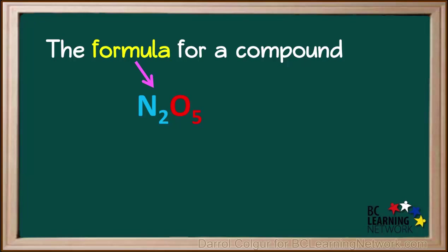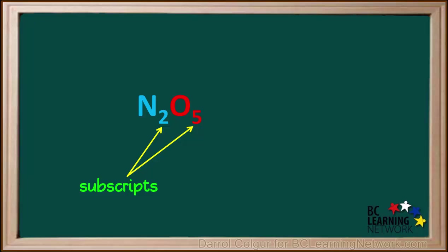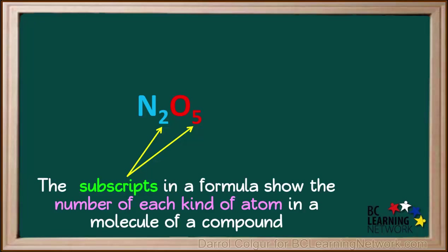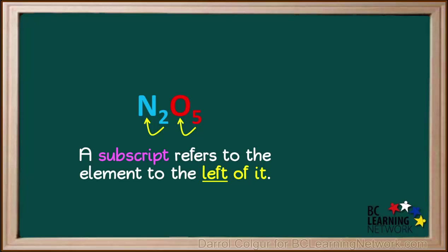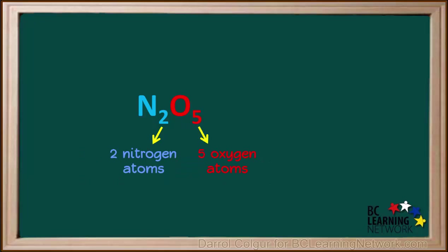The formula for a compound contains element symbols and commonly contains little numbers. Little numbers written to the bottom right of element symbols in a formula are called subscripts. Sub means under and script means to write. The subscripts in a formula show the number of each kind of atom in a molecule of a compound. A subscript always tells us the number of atoms of the element to the left of it. So the formula N2O5 means that one molecule of this compound contains two nitrogen atoms and five oxygen atoms.